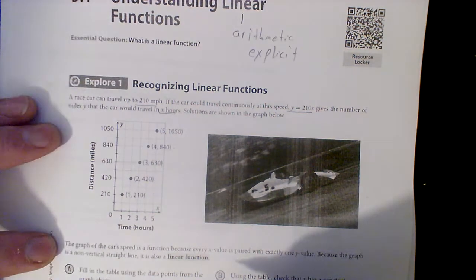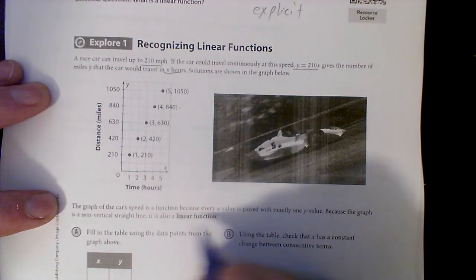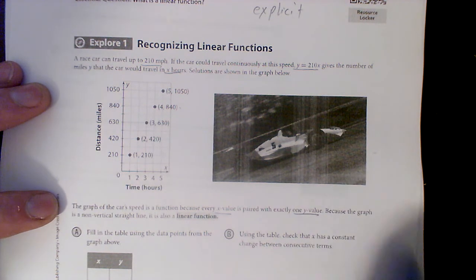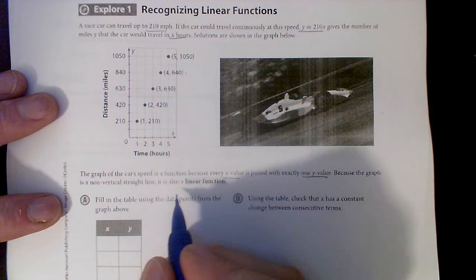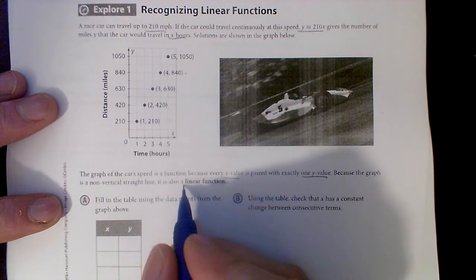The graph of the car speed is a function because every X value is paired with exactly one Y value. Every input has an output. Because the graph is a non-vertical straight line, it is a linear function.